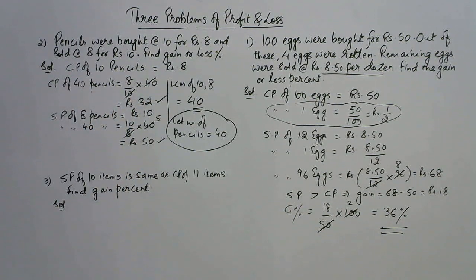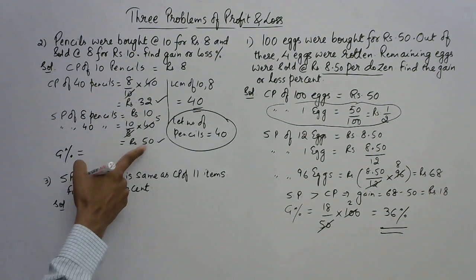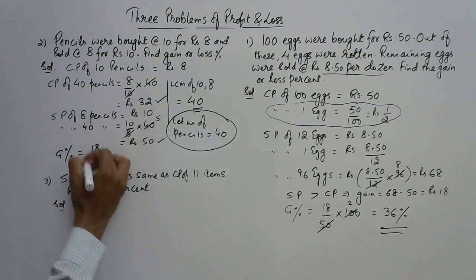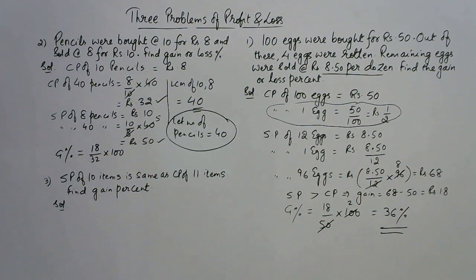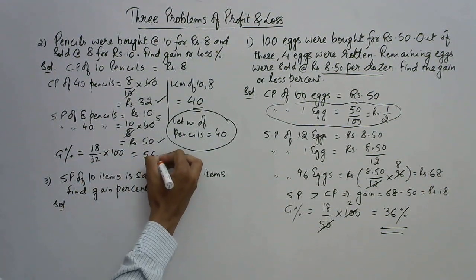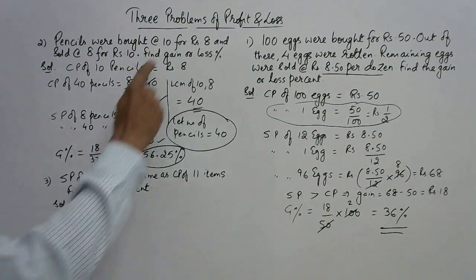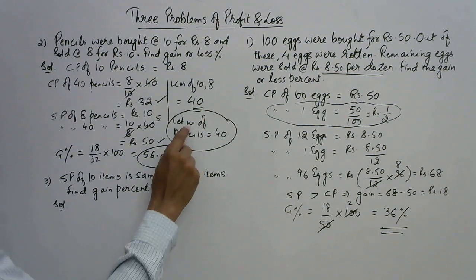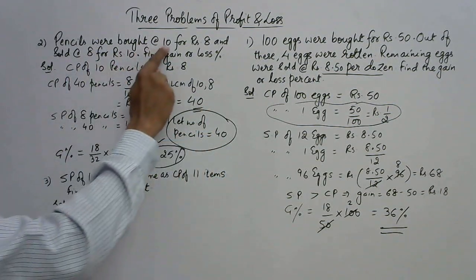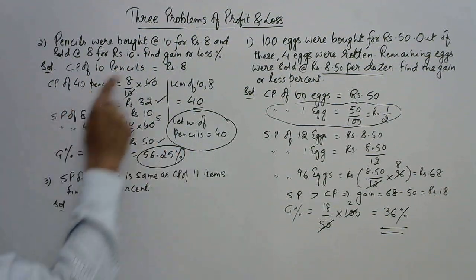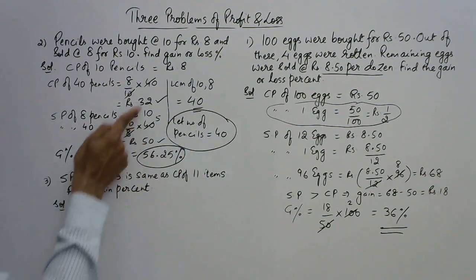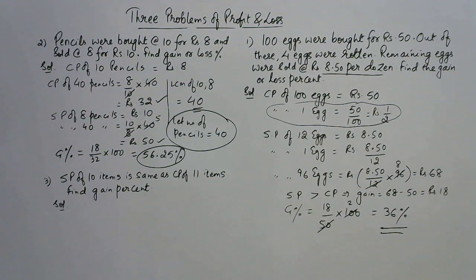Selling price is rupees 50 and cost price is rupees 32, so we have gain. Gain percent is gain upon CP into 100. The gain is 50 minus 32 which is 18, and CP is 32, so gain percent is 18 upon 32 into 100, which comes out to be 56.25 percent. Whenever two quantities are given, take their LCM, find CP using the first condition and SP using the second, then compare to find gain or loss percent.